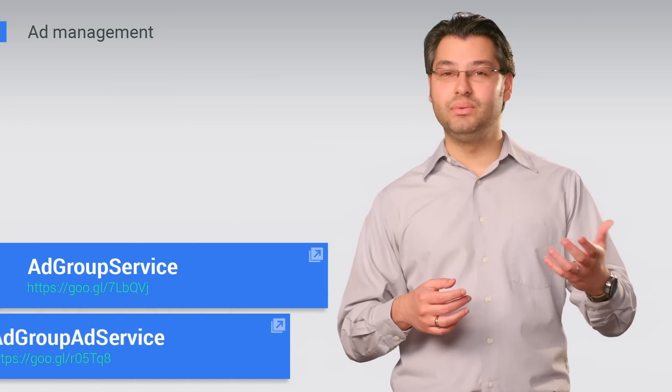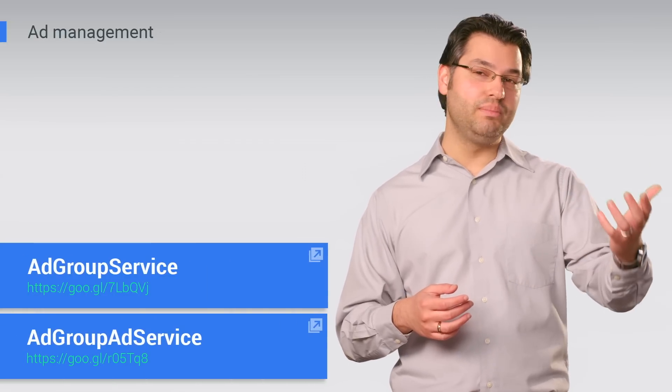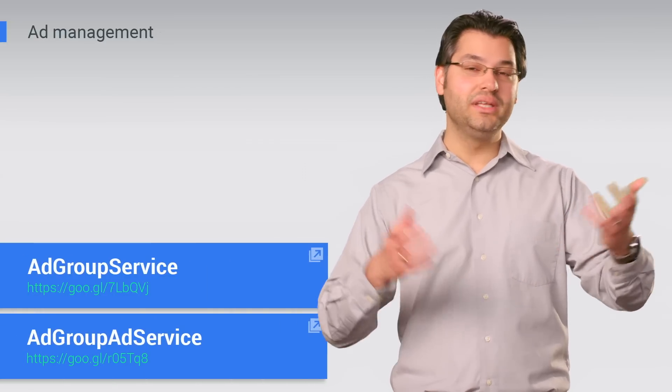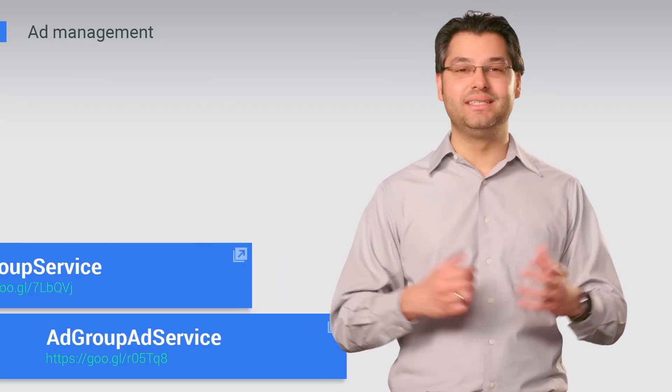With the AdWords API, your software can pause an ad when stock is depleted, then unpause when stock becomes available. So visitors to your site will never be taken to a page only to find that an advertised item is out of stock. No more wondering if your ad budget is well spent, and you'll see conversion rates climb.